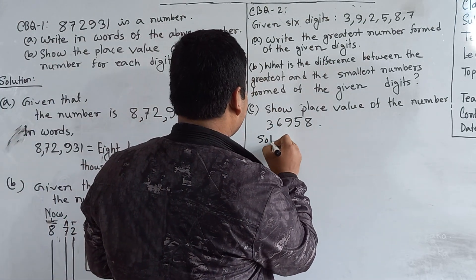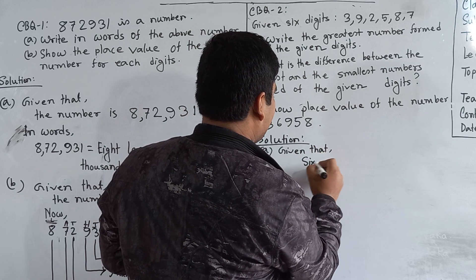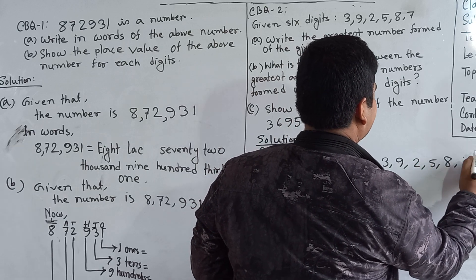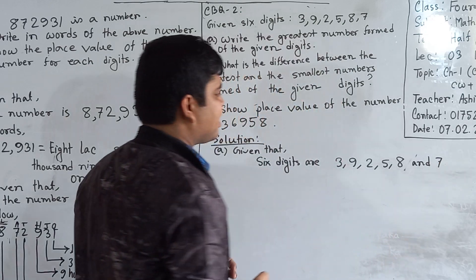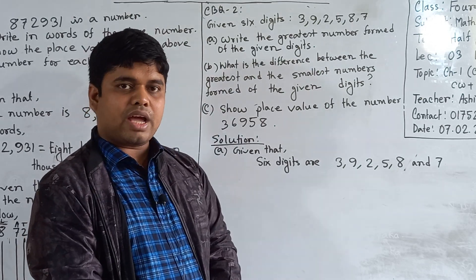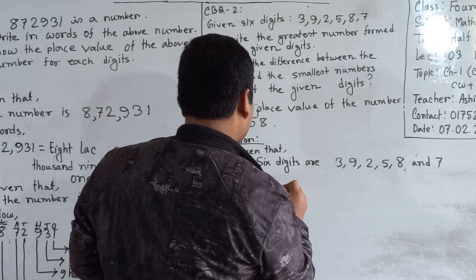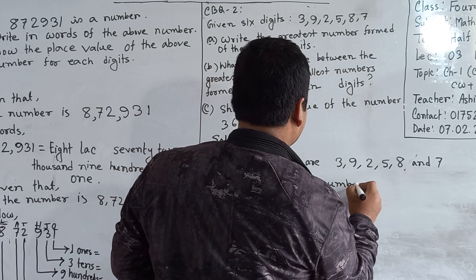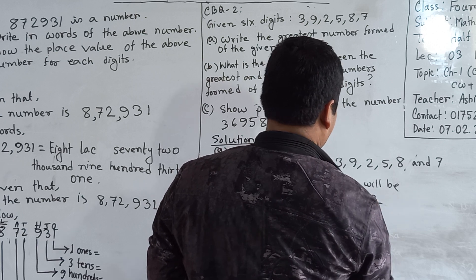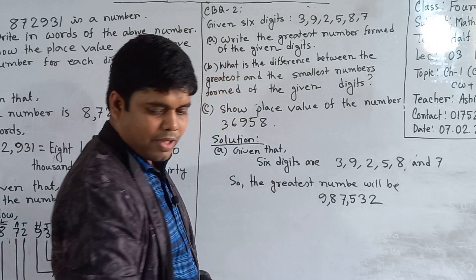A number solution. Given that the six digits are 3, 9, 2, 5, 8, and 7. We arrange the digits in descending order and we get the greatest number. So the greatest number will be 9,87,532. We place the commas here and here. So it is read as 9,87,532. I hope you have understood.